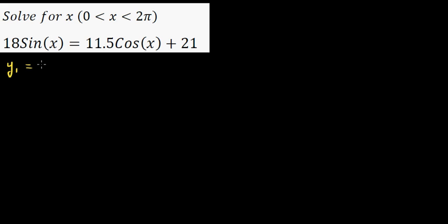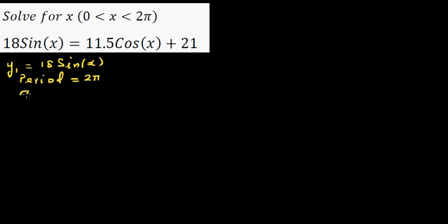y1 is 18 sin x. From this you can know the maximum is 18 and the minimum is minus 18. Your baseline is zero, so this is oscillating between minus 18 and plus 18. Your period is 2 pi — so for a period of 2 pi, you have a maximum of 18, minimum of minus 18, and baseline of zero. Your amplitude is 18.